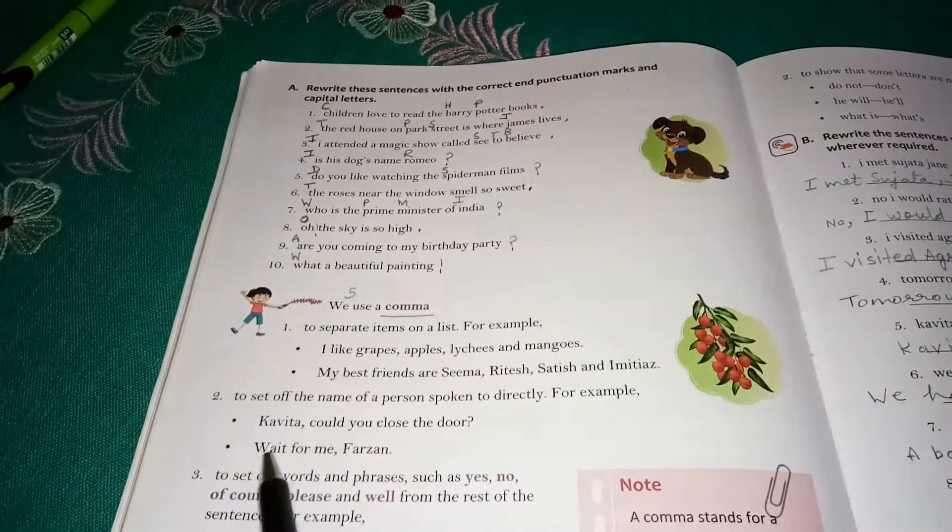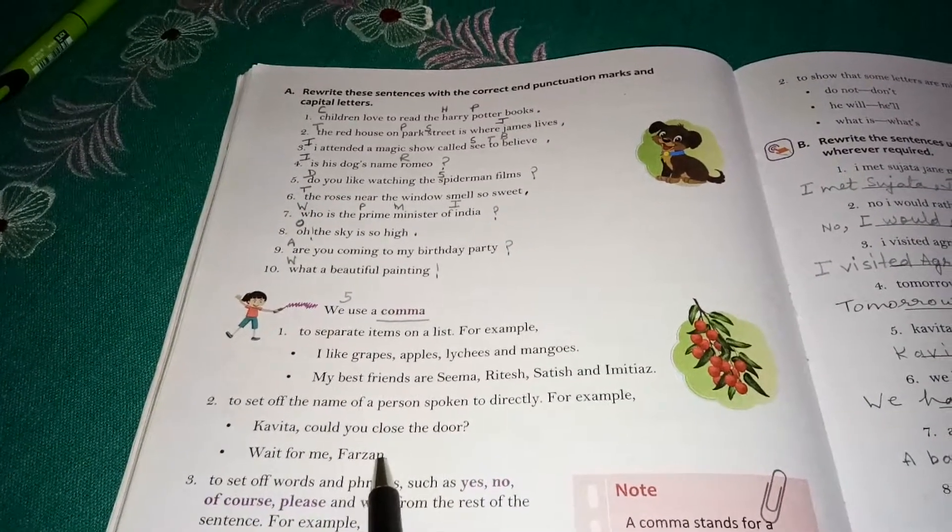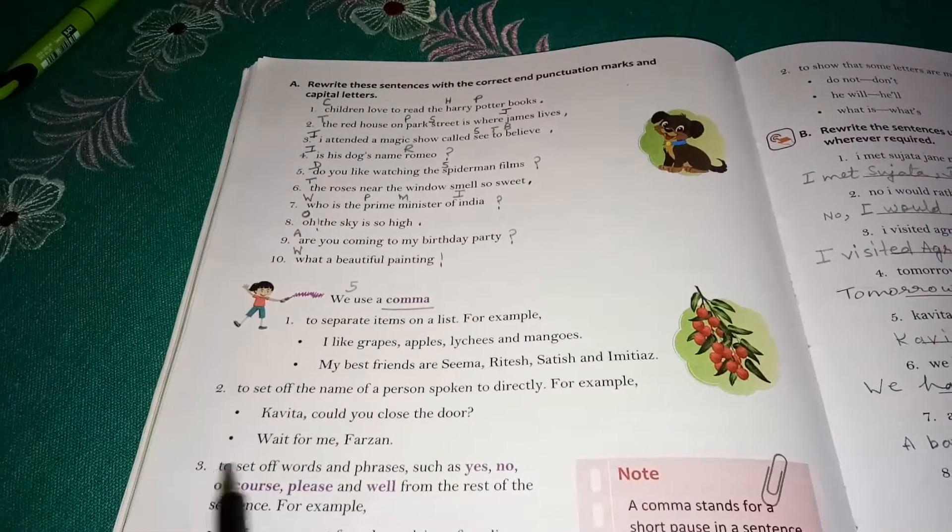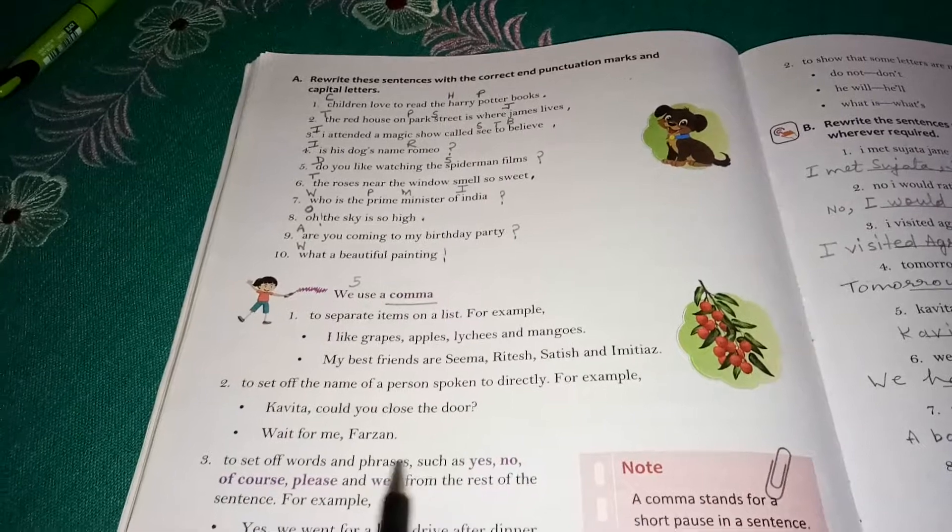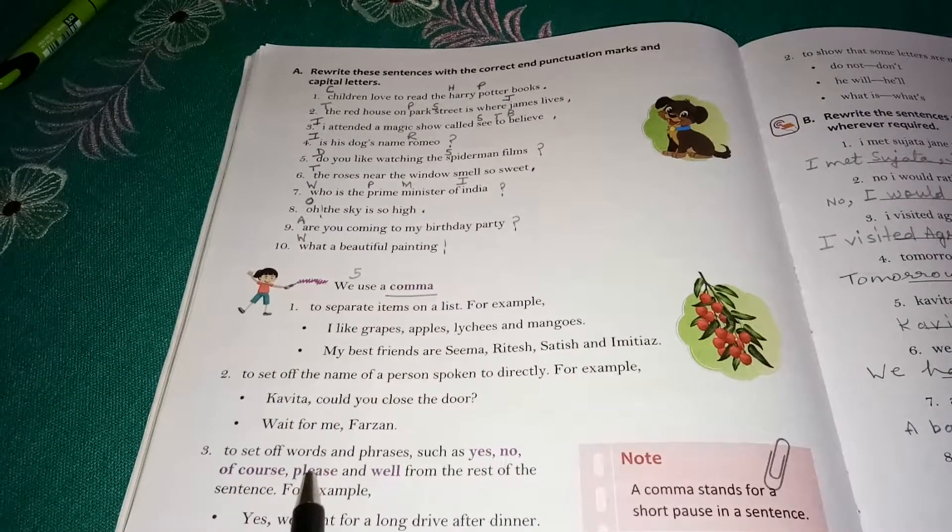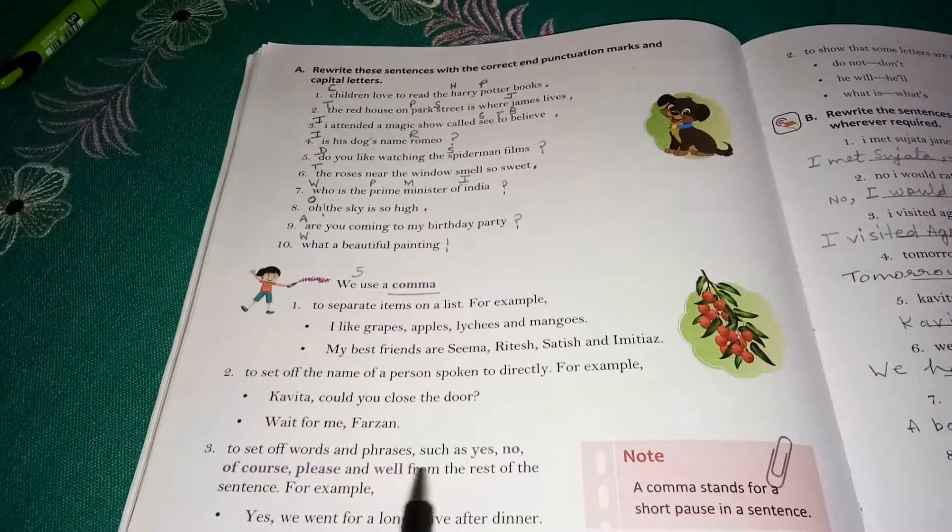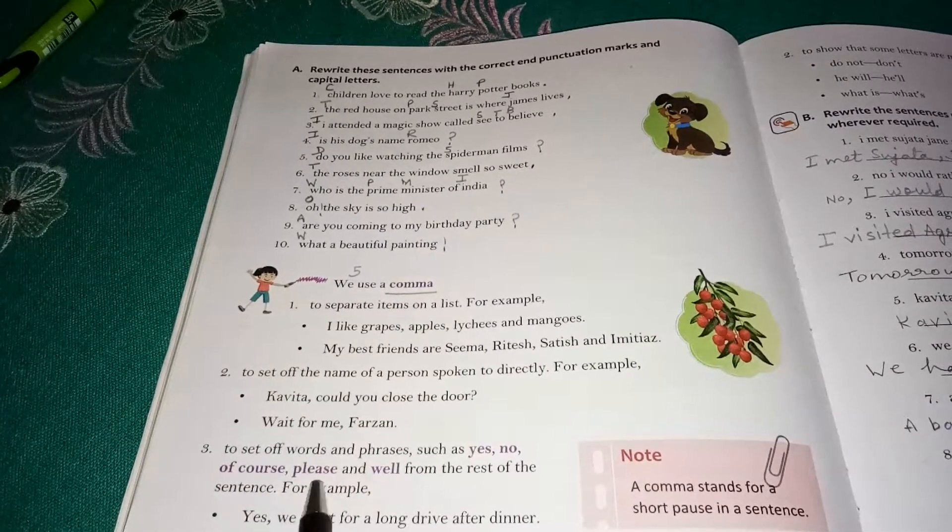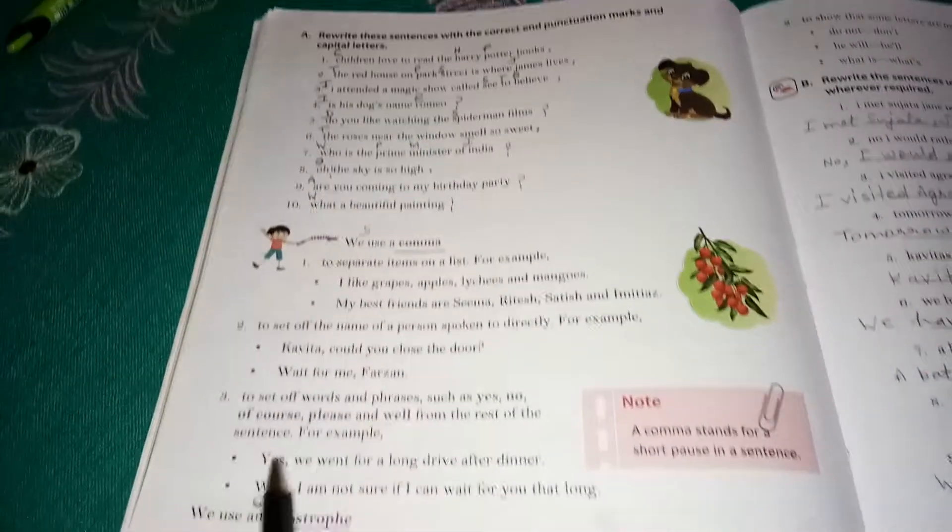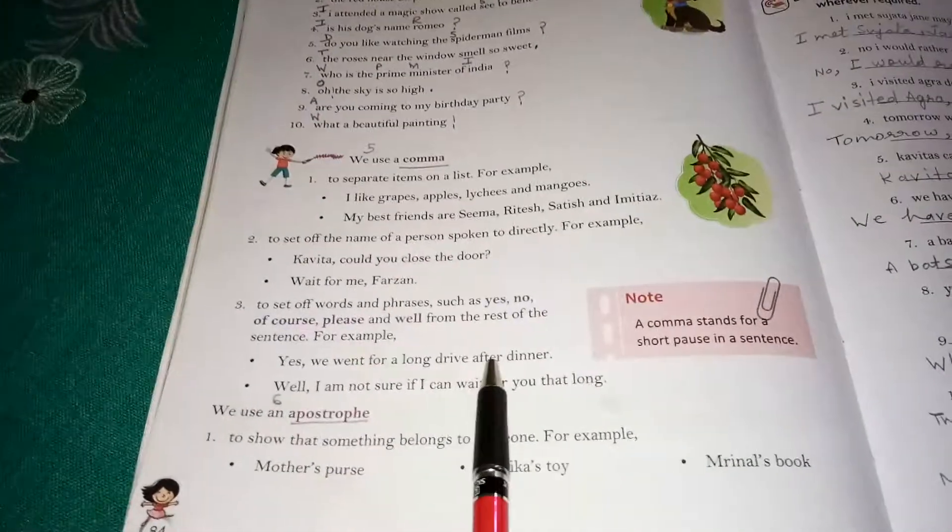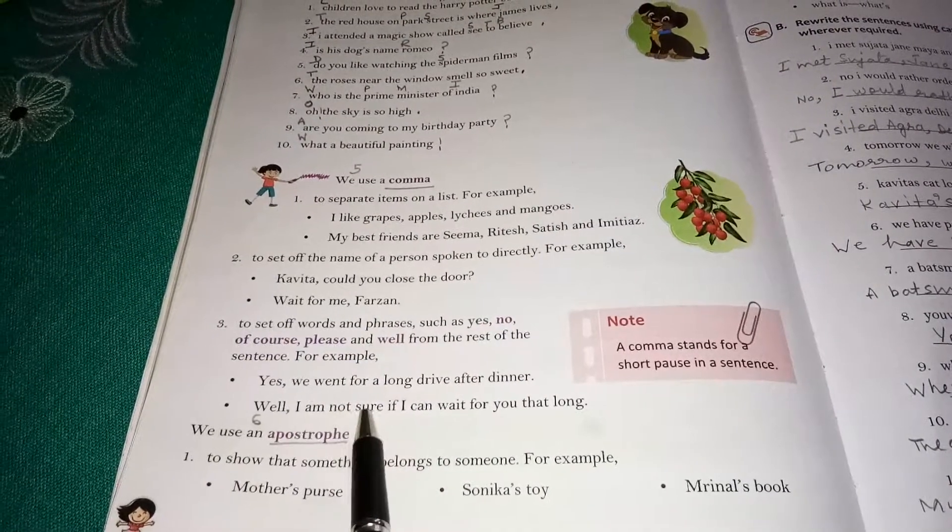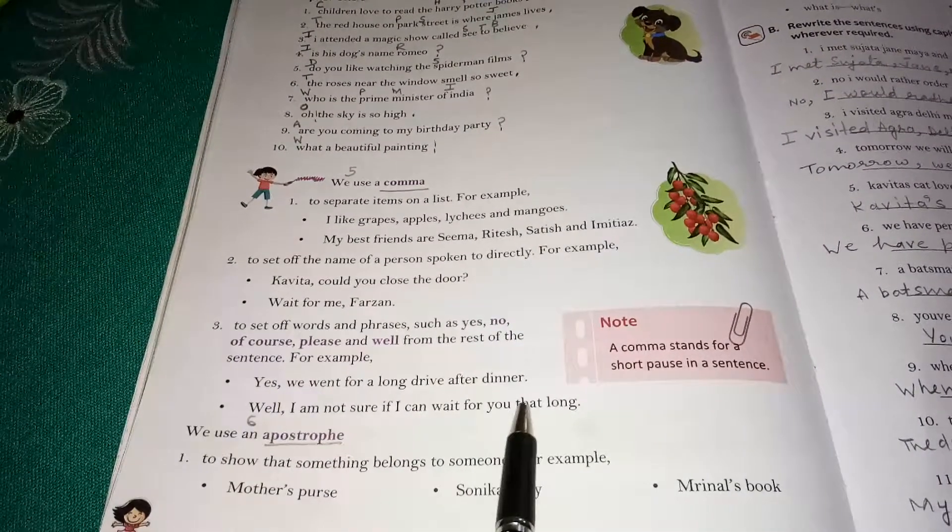Wait for me, Farzan. We use comma to set off words and phrases such as yes, no, of course, please, and well from the rest of the sentence. And children, this is very important. For example, yes, we went for a long drive after dinner. Well, I am not sure if I can wait for you that long.